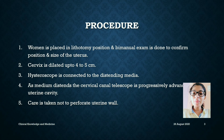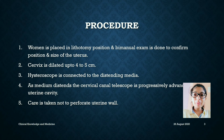Procedure. The woman is placed in lithotomy position and a bi-manual examination is done to confirm position and size of the uterus. The cervix is dilated up to 4 to 5 cm. The hysteroscopy is connected to the distending media. As the medium distends, the cervical canal telescope is progressed into the uterine cavity.